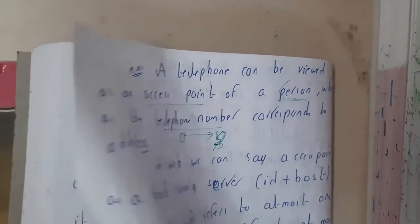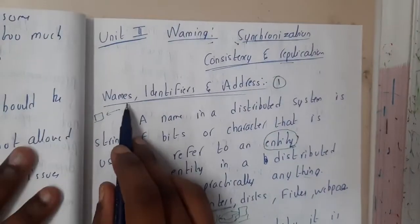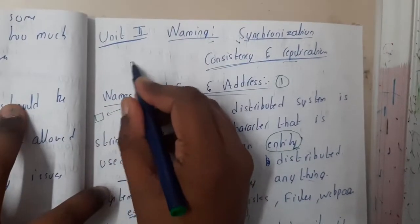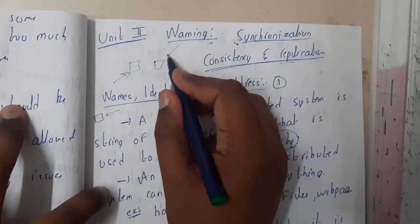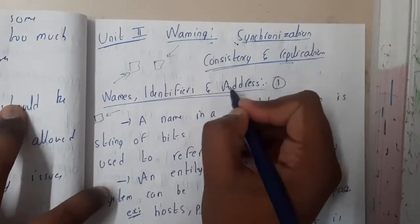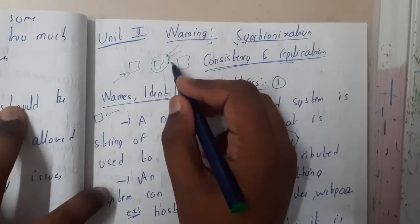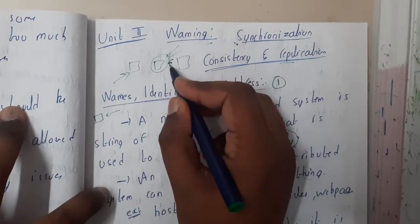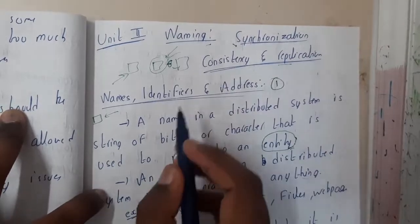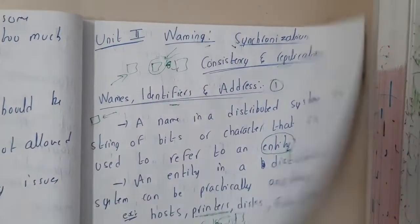So now I got a small idea about name. So let us recall. Name is nothing but given to an entity, and entity is anything. It could be a printer or any kind of device. And address is nothing but this entity. To access it, we will be using an access point, and that access point is nothing but the address.